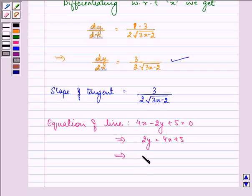This further implies y equals 2x plus 5 by 2. The slope of this line will be equal to 2.